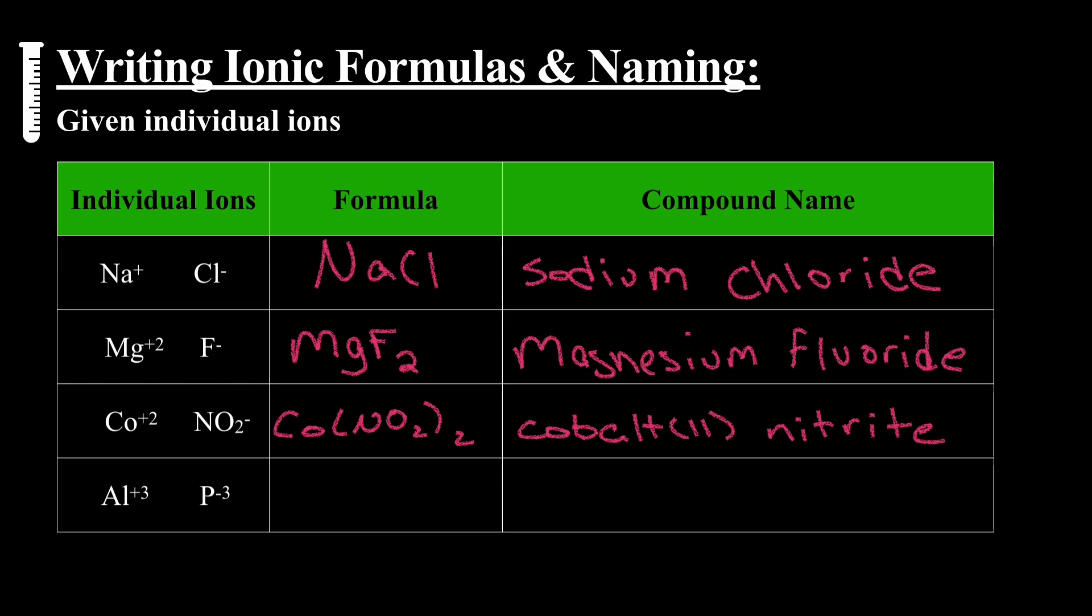Al plus three, P minus three, put them together like charges, AlP, aluminum phosphide.